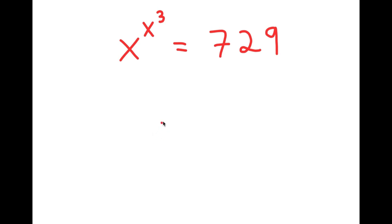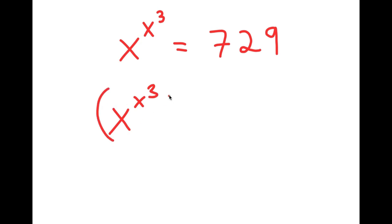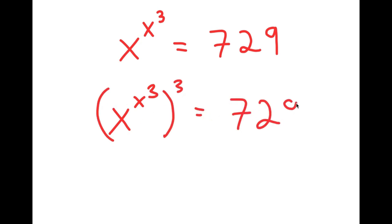To solve this, what I'm first going to do is take the power of 3 on both sides. So I get x to the power of x to the power of 3, to the power of 3, is equal to 729 to the power of 3.